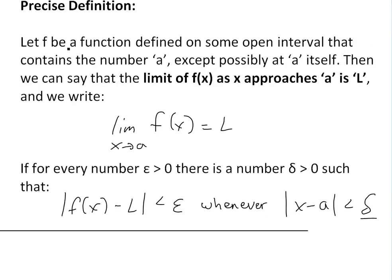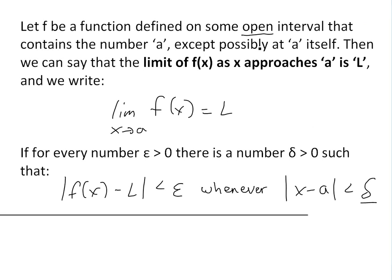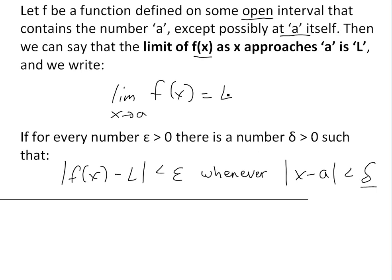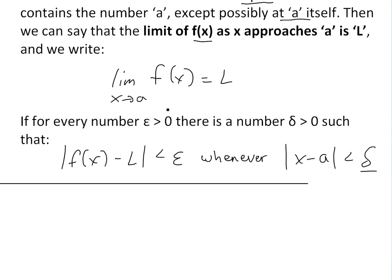To recap: let f be a function defined on some open interval — it just means it doesn't have to equal the endpoints; see the video link below on open and closed intervals. It also contains the number a, except possibly at a. That's all the limit needs to exist. Then we can say the limit of f(x) as x approaches a is L, and we write it as: limit x approaches a, f(x) equals L.